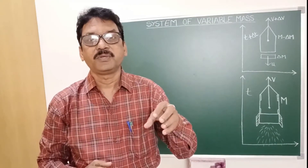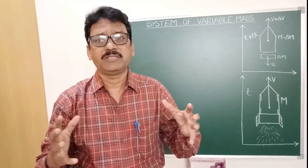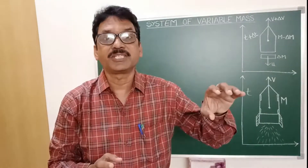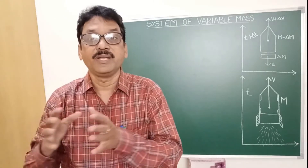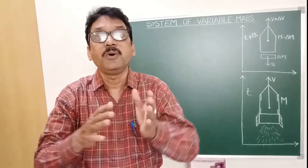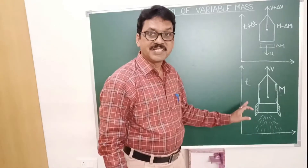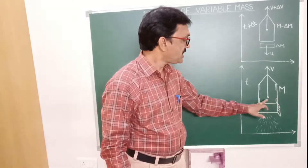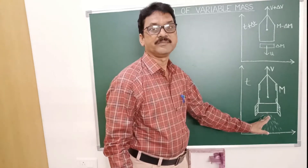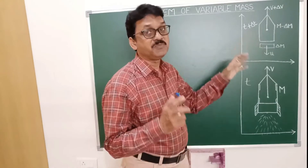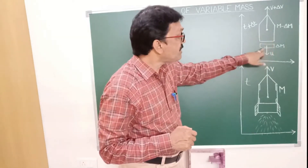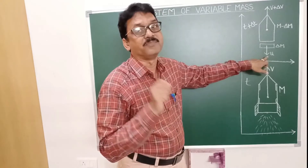The ejected gases impart a large momentum to the rocket. As a result, the rocket moves in a direction opposite to the escape gases. Let us consider a system of mass m whose center of mass is moving with a velocity v at any instant of time. After t plus delta t seconds, let us assume that a mass delta m has been ejected out from the system, whose center of mass is moving with a velocity u as seen by an observer.